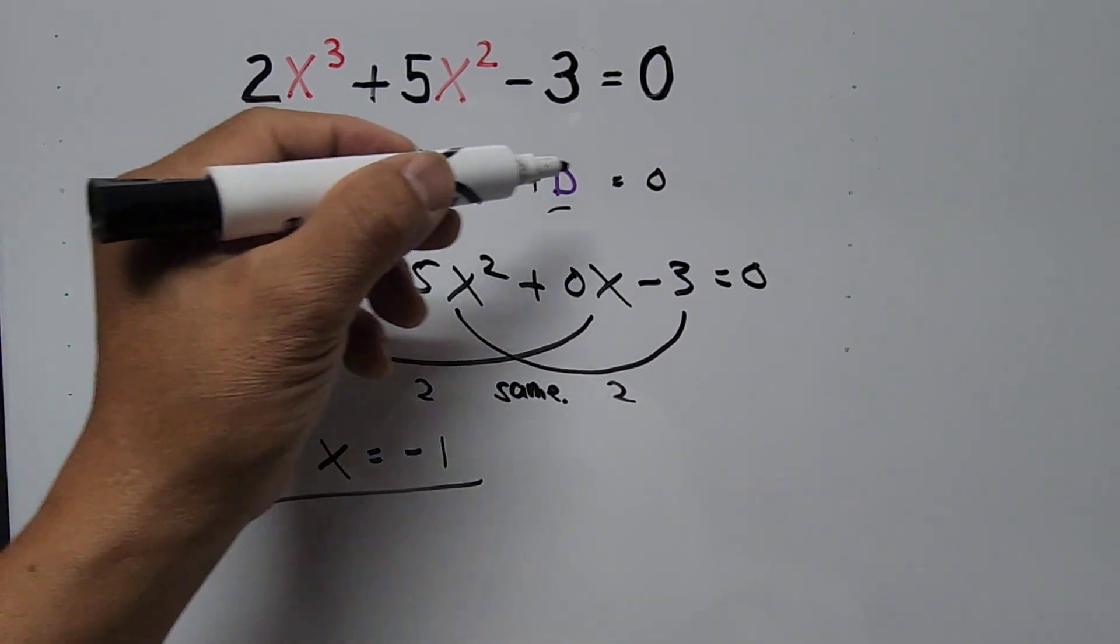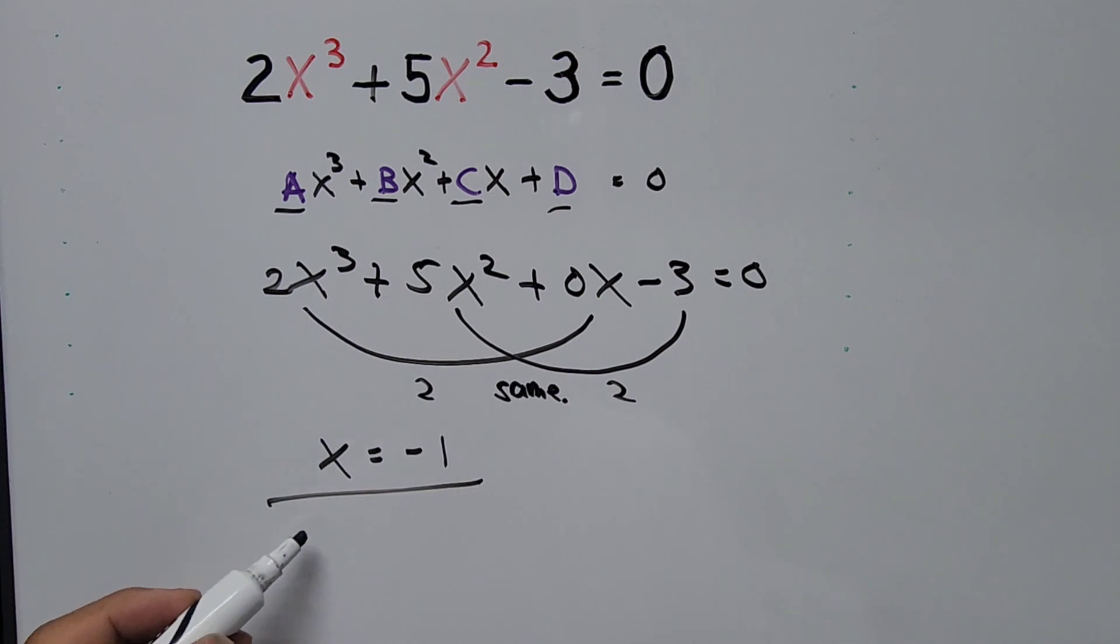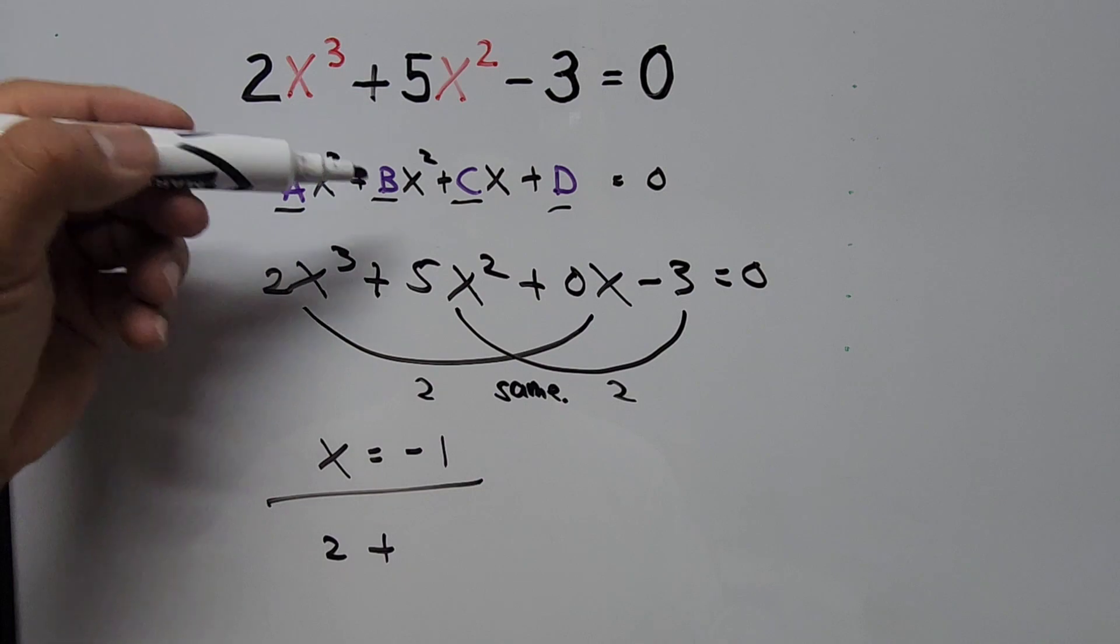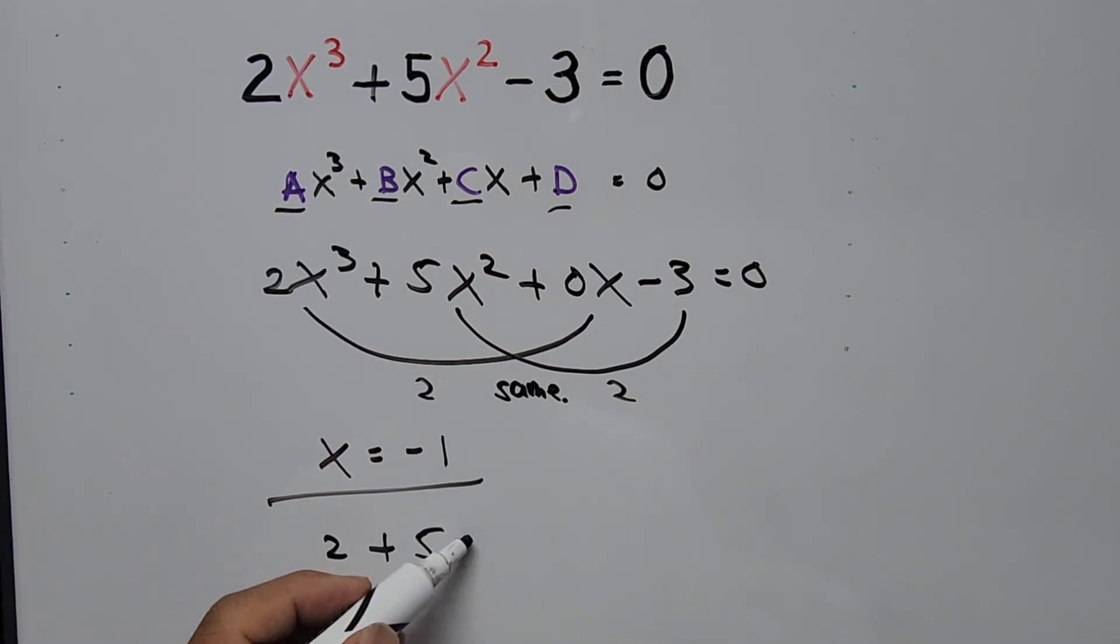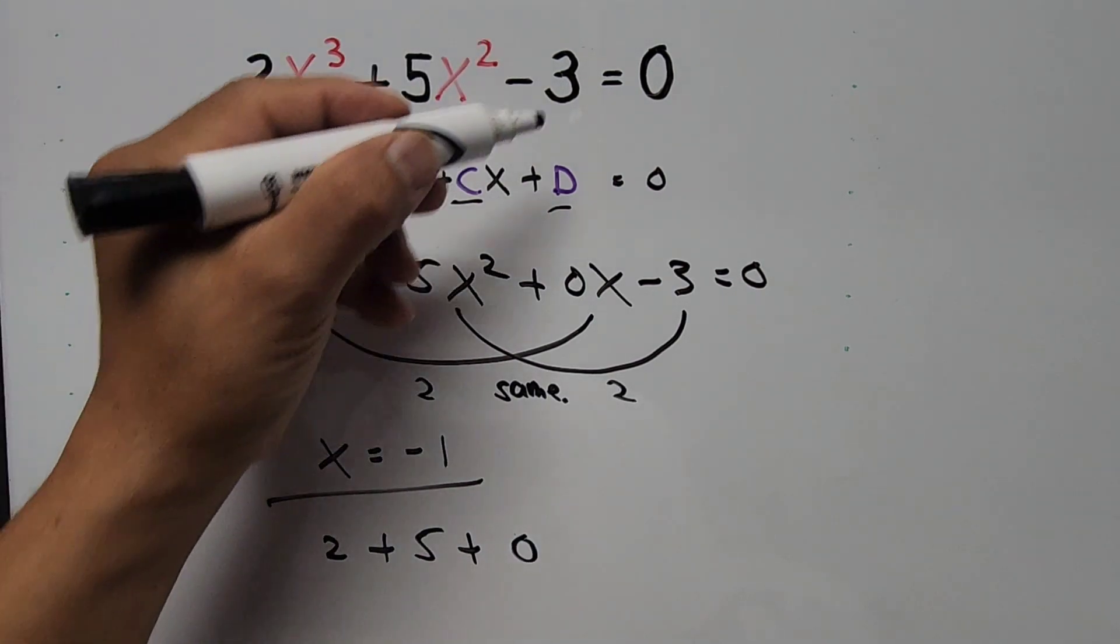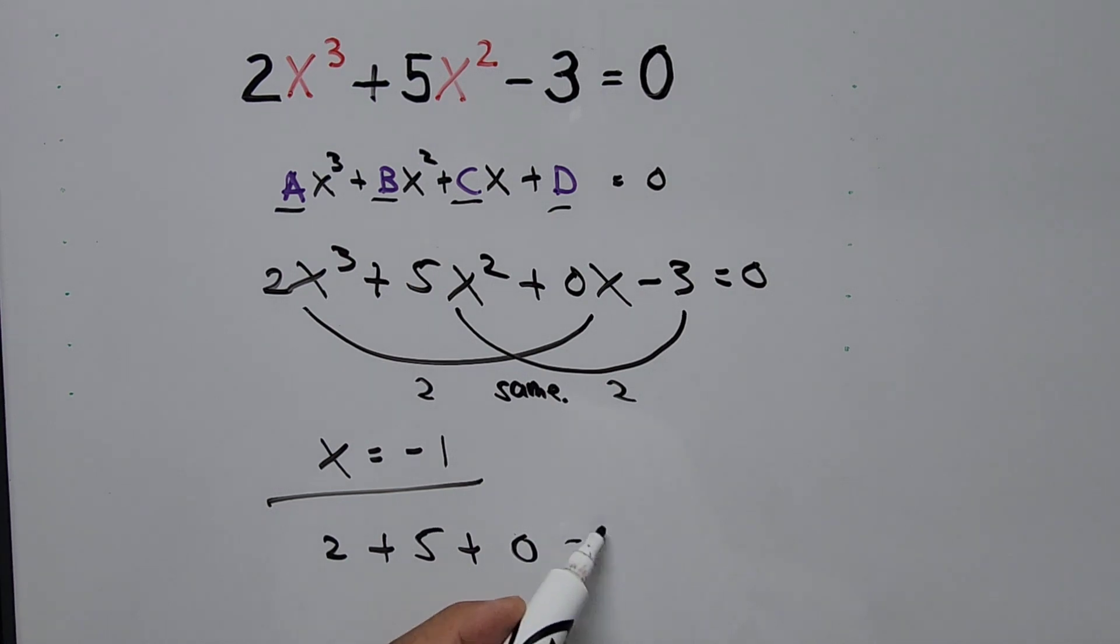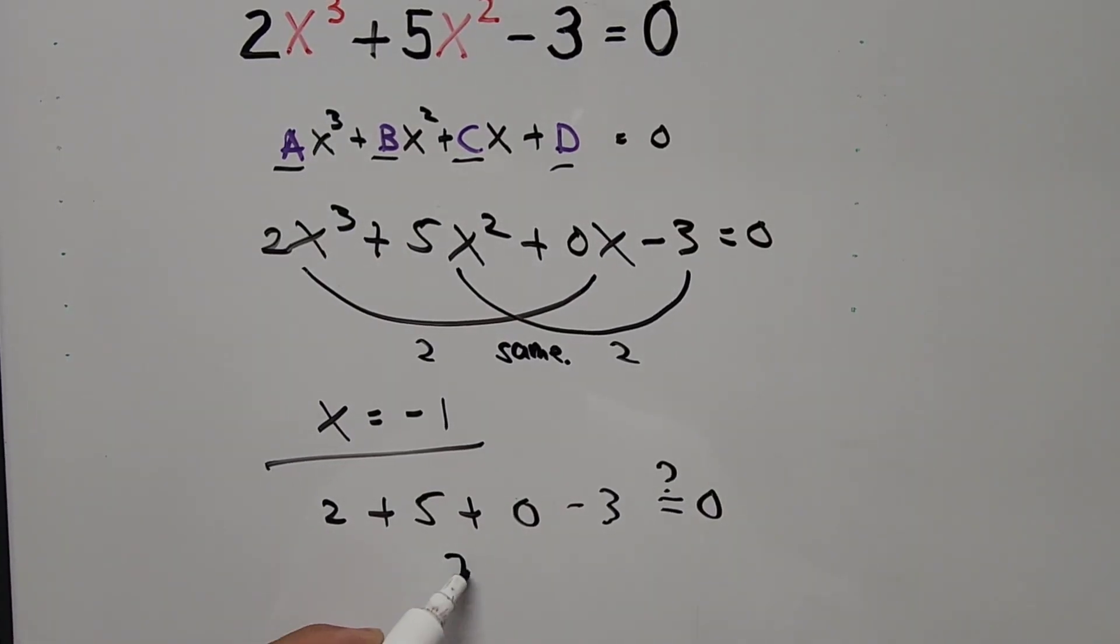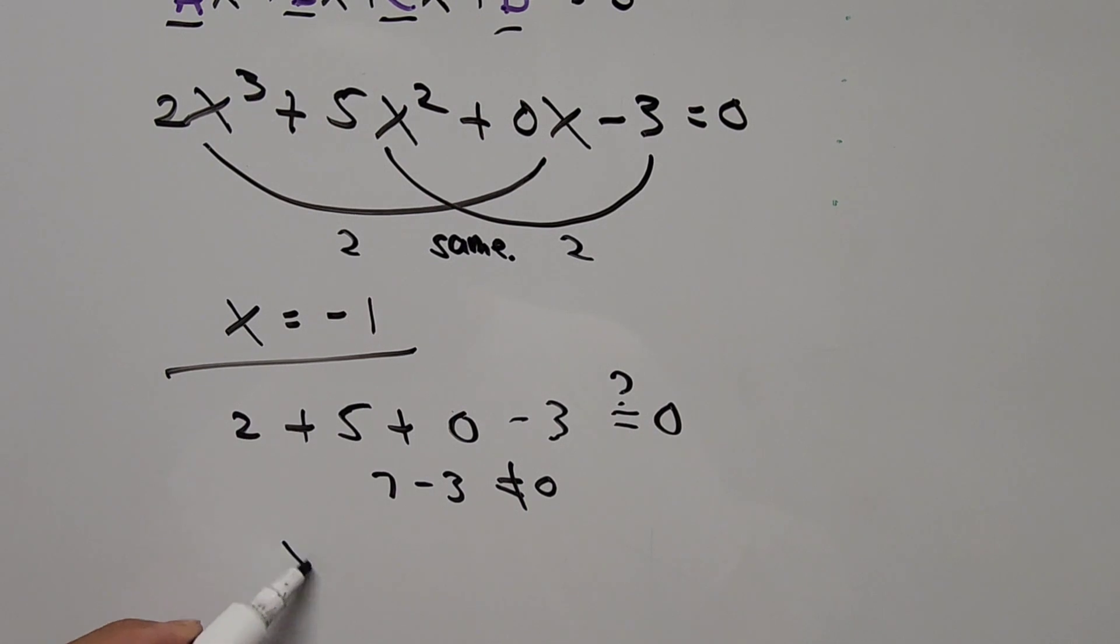So here A is 2, and B is the coefficient of the second term x², B is 5. And the third term, since the third term is missing, that's 0. And the last term called D is -3. If this is equal to 0, then one of the values of x must be positive 1. 5 + 2 is 7, minus 3 is not equal to 0. This simply means that x is not equal to positive 1.